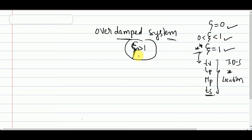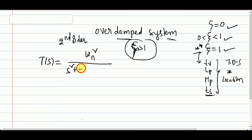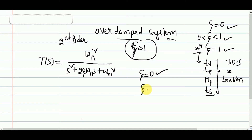So let's get started. We already know that the transfer function T(s) for a second-order system is omega_n squared divided by s squared plus 2*zeta*omega_n*s plus omega_n squared. In the undamped system we substituted zeta equal to 0, and in the critically damped system we substituted zeta equal to 1 directly into the derivation.